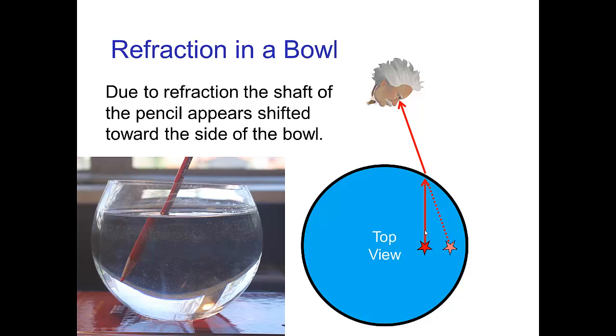This is due to simple refraction. A light ray from the tip of the pencil reaches the edge of the bowl and is refracted as it exits. It appears as if this light ray is coming from a spot closer to the side, so the pencil appears shifted towards the side of the bowl when underwater.